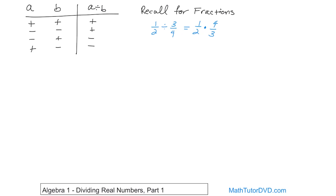The first problem is negative 21 divided by three. Following our chart, we have a negative number divided by a positive number. 21 divided by three is seven, but since it's negative divided by positive, the answer is negative seven.